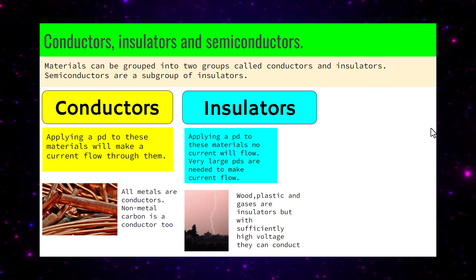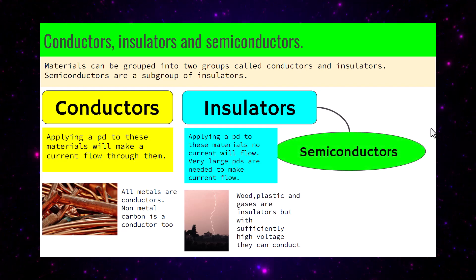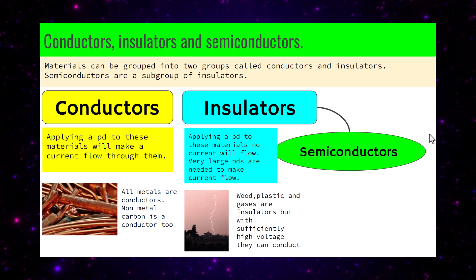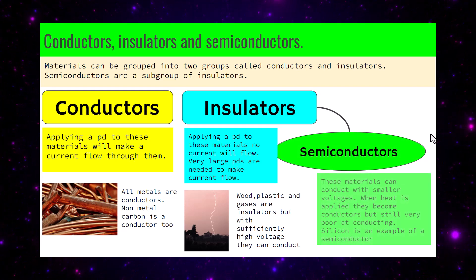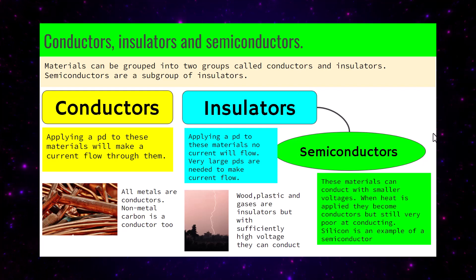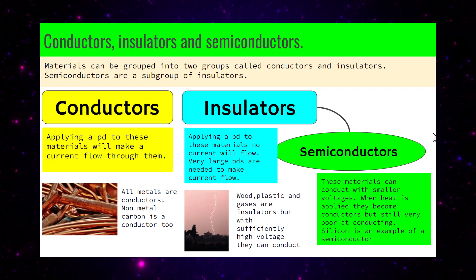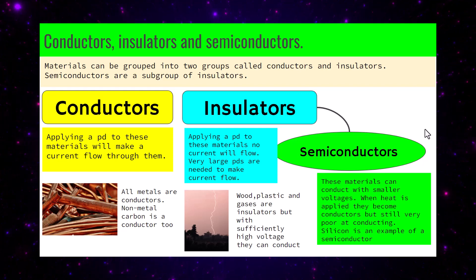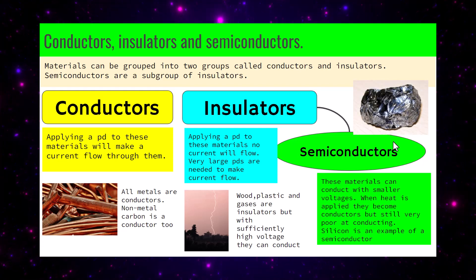With sufficiently high voltage, insulators can conduct — as witnessed by lightning, when air, which is usually an insulator, breaks down because of the high voltages across it. Semiconductors are a subgroup of insulators and are materials which conduct with small voltages, and when heat is applied they become better conductors, but still very poor. Silicon is an example of a semiconductor.